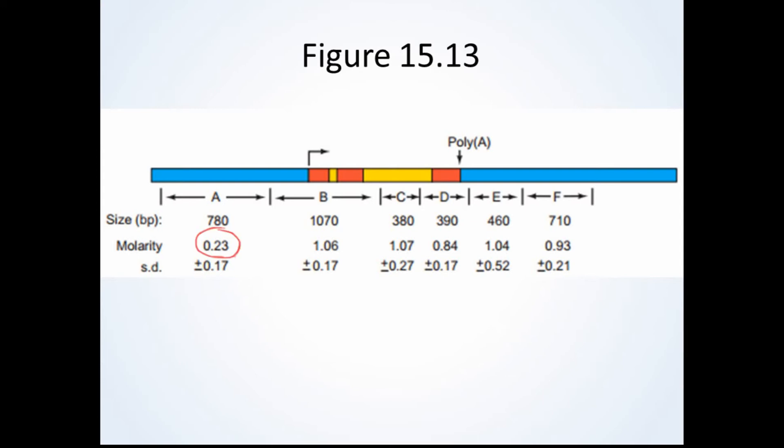Upstream of the globin gene, the molarity of hybridization with DNA fragment A is 0.23. This number represents the background noise, which shows how much nonspecific binding there is of RNA to the DNA probe. This similarity increases to 1.06 for DNA probe B, which shows that transcription of this region is occurring, and that the probe is binding to a region that contains both introns and exons. If this number were to remain around 0.23, then it would likely still be just background.